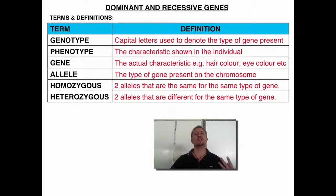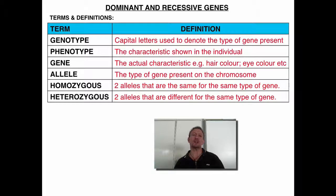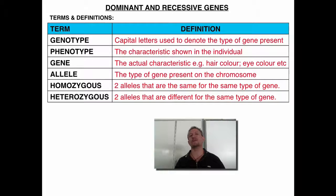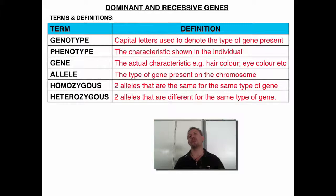The first thing we're going to need to go through when we're dealing with any form of genetic cross is some definitions. I've put up the major definitions here so that you can use them — by all means write them down. You are going to need to learn them. You're going to need to identify and understand what we mean by these words: genotype, phenotype, gene, allele, homozygous, and heterozygous. Let's go through them so you can understand what's going on.